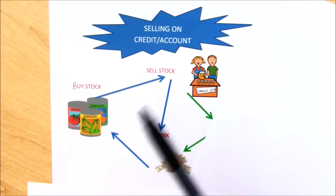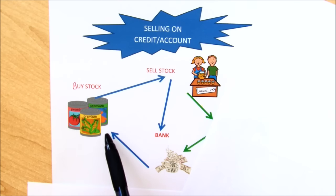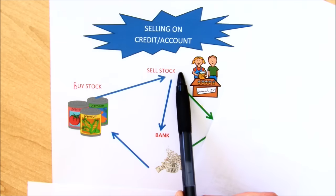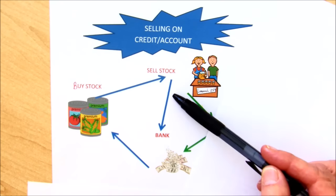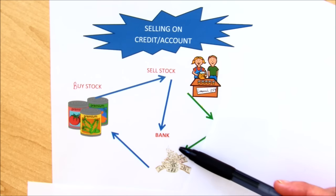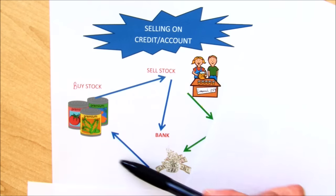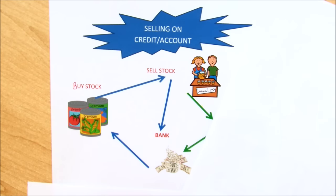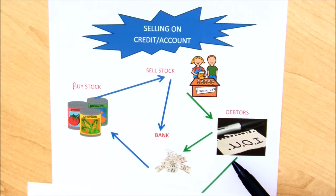They pay later. Looking at our working capital cycle, our normal process would be to buy our stock, have that in the stock room, then sell the stock, get the cash, so the money comes back into the business's bank account. You would use that money, buy more stock, sell, and so the cycle goes round. But in reality, a lot of the stock gets sold on credit, on account.